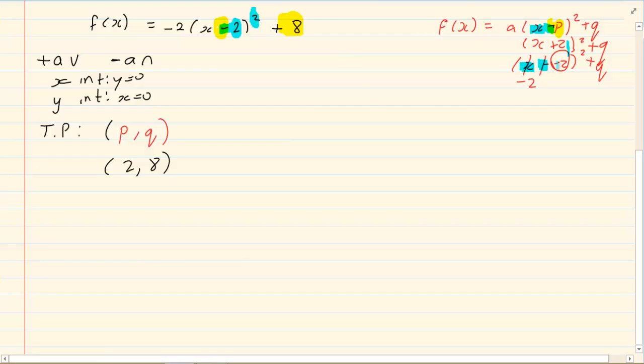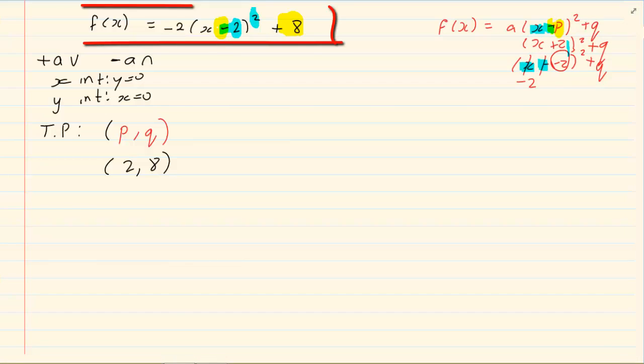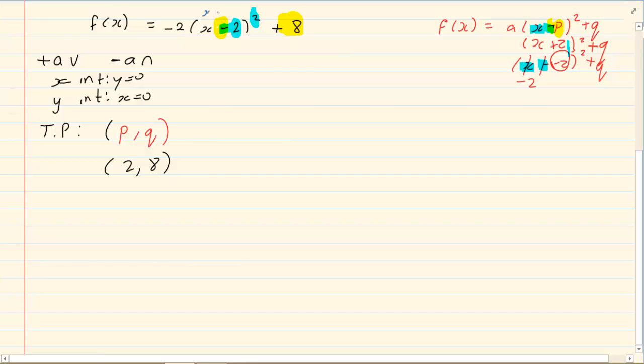So what are we left with? P is minus 2. Now same thing here. If we have (x minus 2) all squared, then we know the x and the minus is from the standard equation. So P linking it up makes it 2. And then Q is plus 8. Remember Q is the remainder. Now that gives us our turning points.